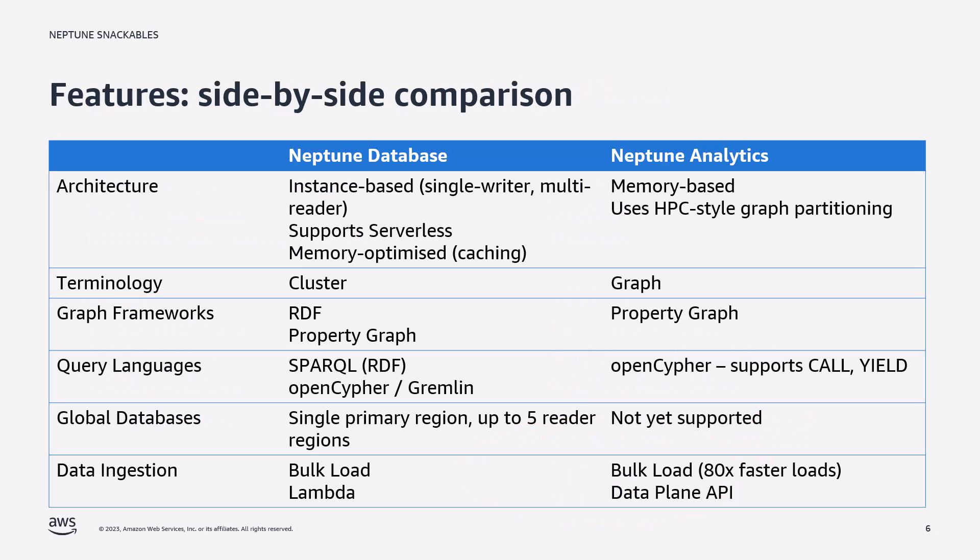On the topic of data ingestion, both Neptune database and Neptune Analytics support a bulk load API. However, due to the way Neptune Analytics is designed, you can achieve up to 80 times faster load speeds.